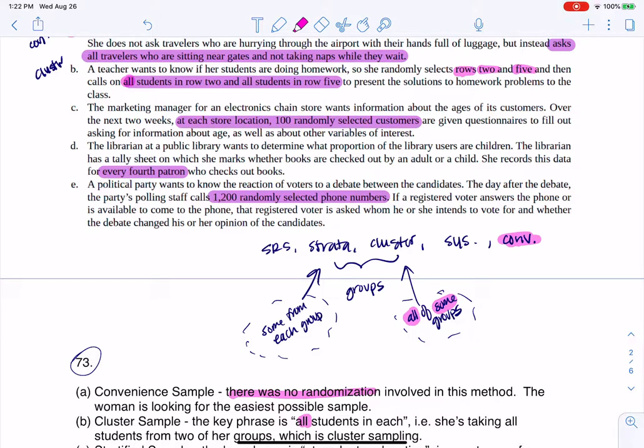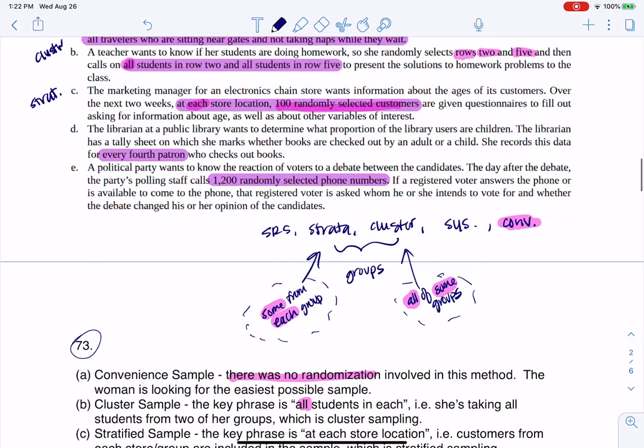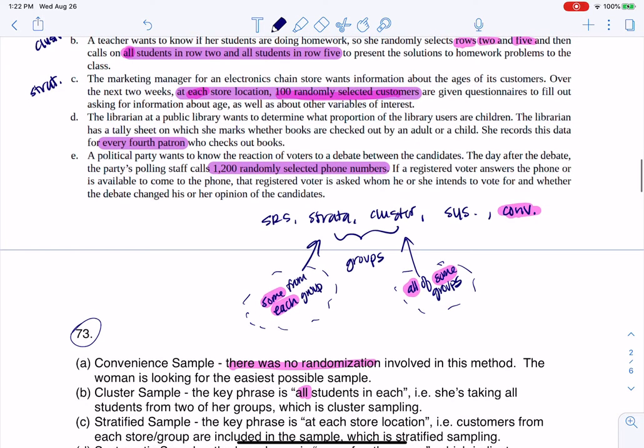The next one says you're going to go to each, we're talking about a manager, and they want to know about the ages of their customers. They're going to go to each store location, right? And then they're going to get 100 folks from each group. And that's where you see we're taking some from each group. And so we are grouping, right? We're grouping by location, but we're doing some from each. So this is going to be stratified. And if I scooch this down a bit, you see me saying that, hey, we're going to each location, so we're getting some from each.